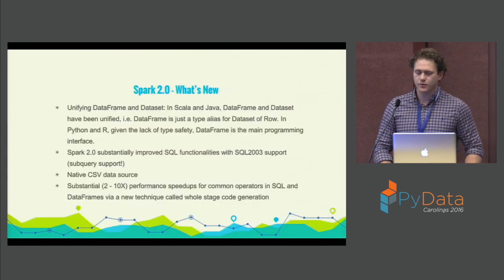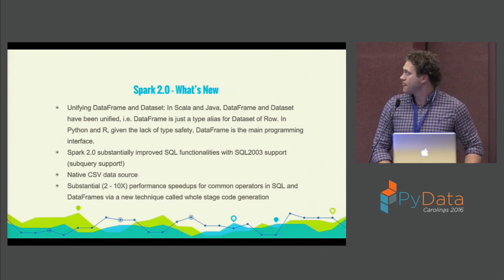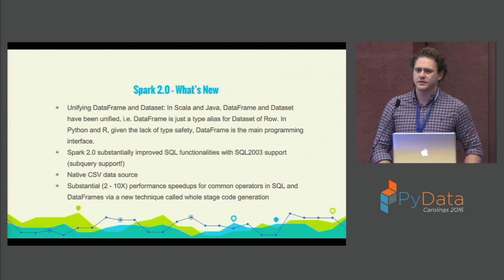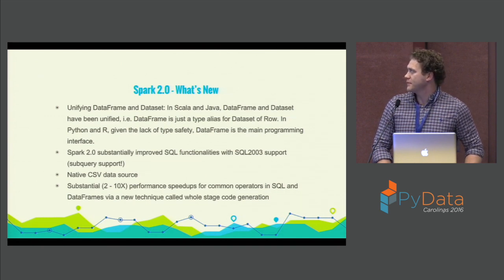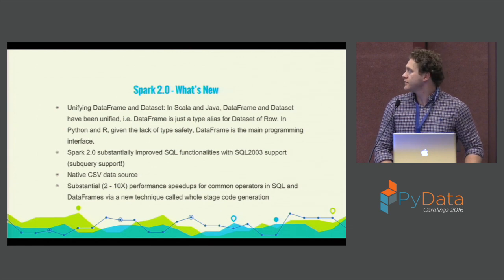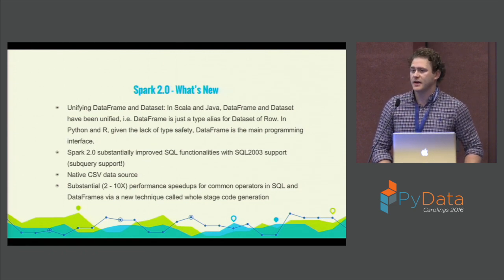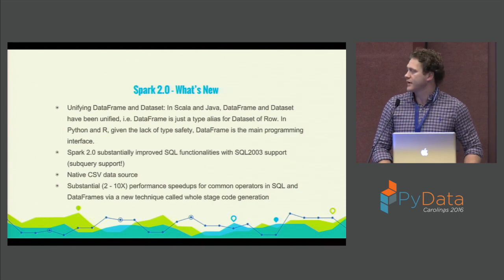I just wanted to briefly touch on what some of the new features of Spark 2.0 are. Spark 2.0 is kind of a unifying release — it brings the DataFrame and Dataset differences between Java and Python into unity. Due to the lack of type safety for R and Python, the DataFrame is the main programming interface. It also has substantially improved SQL support, so you can do sub-queries finally, which is very nice. You also have native CSV reading, thanks to Databricks, and it is substantially faster — between 2 and 10 times faster for common SQL operators and DataFrame operations.